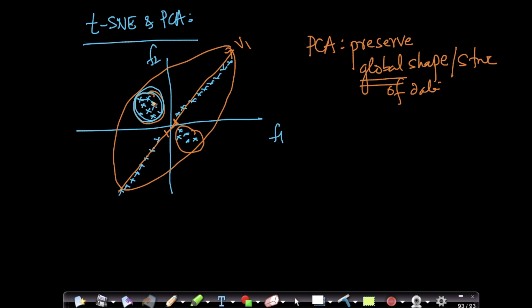PCA doesn't care about distances between points. It cares about the direction which maximizes variance. We'll understand more about global structure preservation and local structure preservation when we learn the internals of T-SNE in the next few videos.